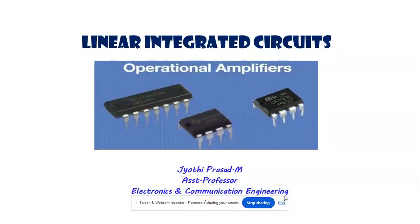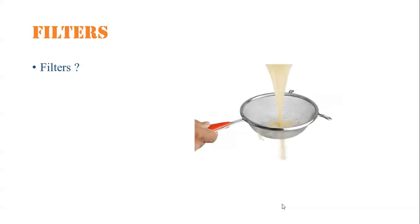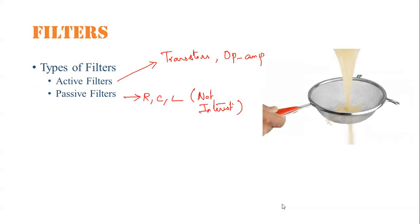Hi everyone, myself Jyothi Prasad from RMD Engineering College. We have discussed operational amplifier, non-inverting and inverting amplifiers. Now we are going to discuss about filters. Basically, a filter filters the unwanted components and only allows wanted components. We have seen low pass filter and high pass filter with respect to a simple RC combination. Now, how can we make the same LPF and high pass filter using an op-amp?